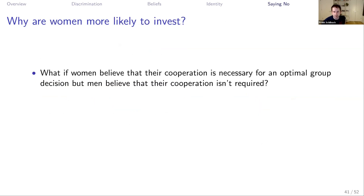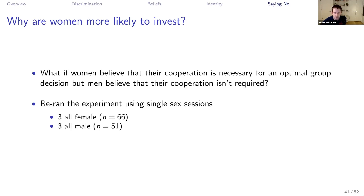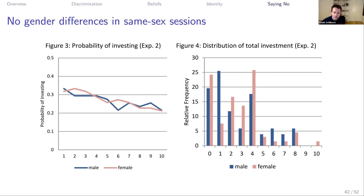Why are women more likely to invest? Is it that women believe their cooperation is necessary for an optimal group decision while men think someone else will do it — particularly a woman in the group? To test this, the authors run the same experiment using single-sex sessions. Interestingly, these gender differences go away entirely in same-sex sessions — there are no gender differences when groups are single-sex.